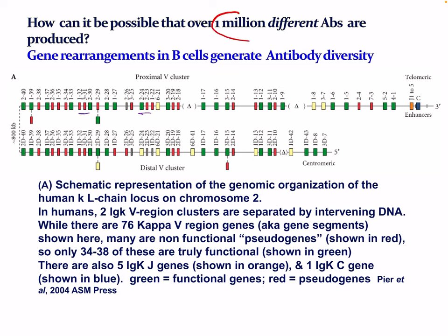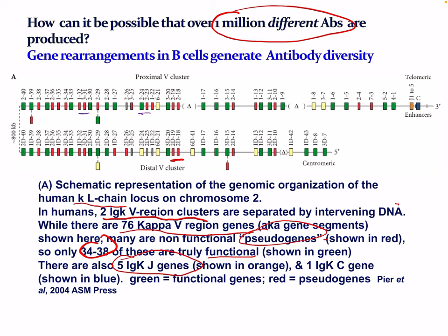The kappa light chain locus lies on chromosome 2 in humans. We have two immunoglobulin kappa variable region clusters separated by intervening DNA. While there are 76 kappa V region gene segments, many are non-functional pseudogenes. Only 34–38 are truly functional. There are also five immunoglobulin kappa J genes and one C gene. The green-marked genes are functional and the red are pseudogenes, illustrating the complexity of variability on just this one chromosome.